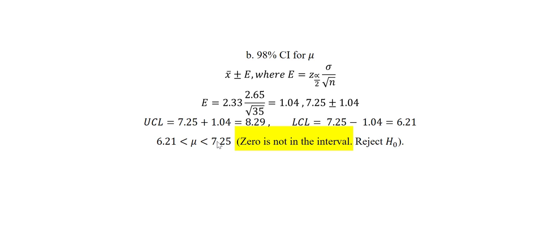We can notice that there is no zero in this confidence interval, so as a result of that we will be rejecting the null hypothesis, which supports the decision we made earlier on.